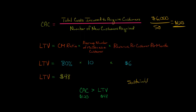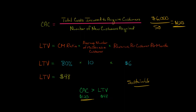What I mean by that is this: just think about it using common sense. If it takes $120 to get a customer and you only get $48 from that customer, in the long run you're going to lose money. What you want is the lifetime value of a customer to the customer acquisition cost to be at least three to one, with the lifetime value obviously higher than the customer acquisition cost — three, four, or five to one.